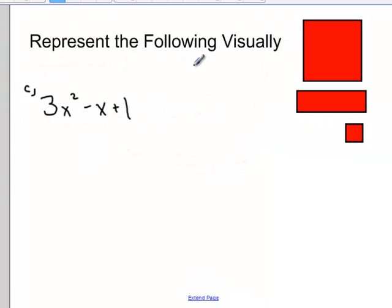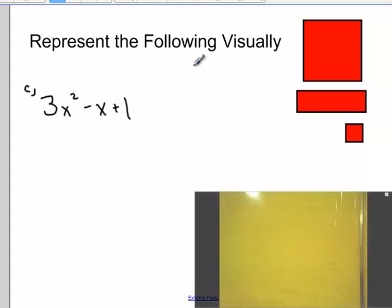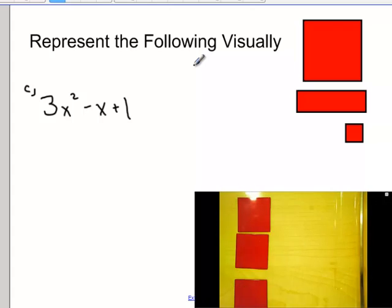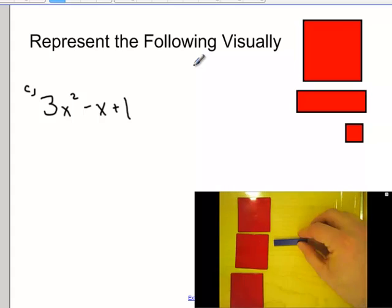Going back to another example: 3x squared minus x plus one. I could show that by using three x squared tiles, a negative x tile, or blue tile, and then one positive unit.